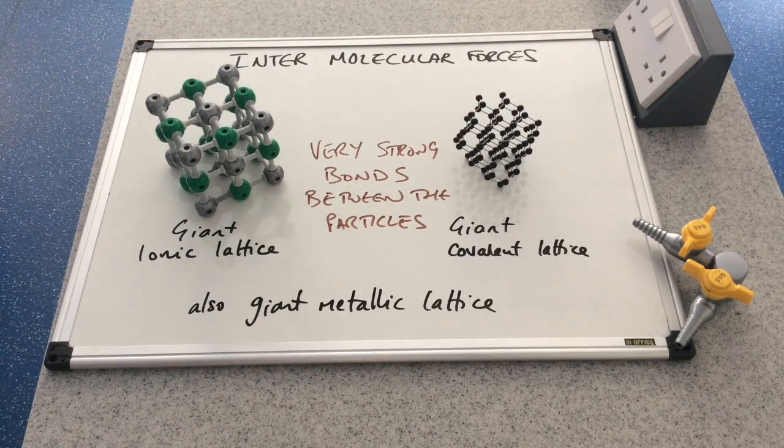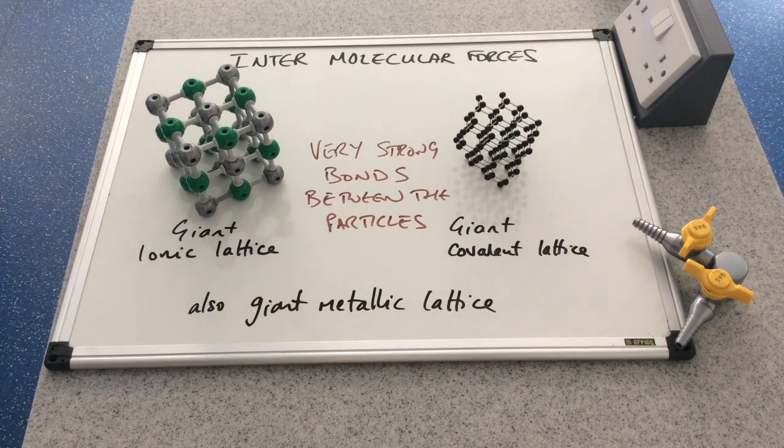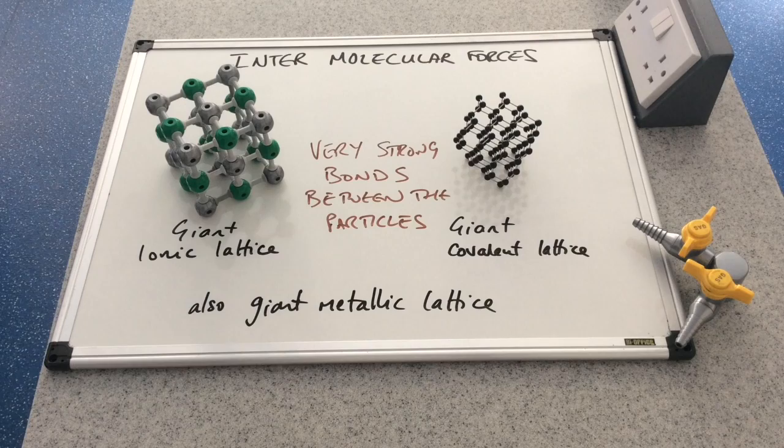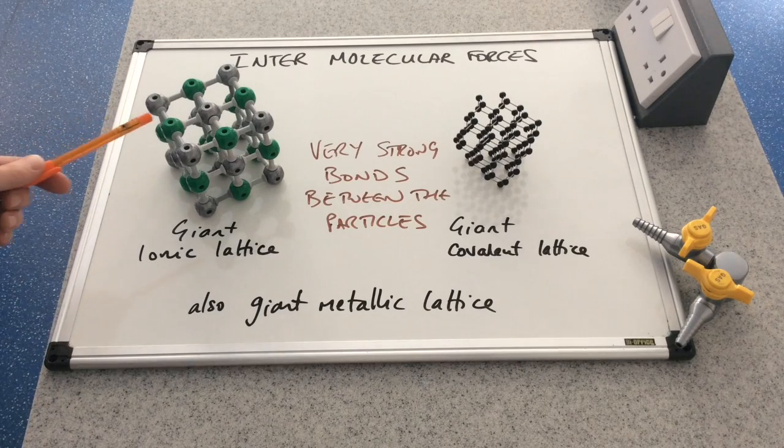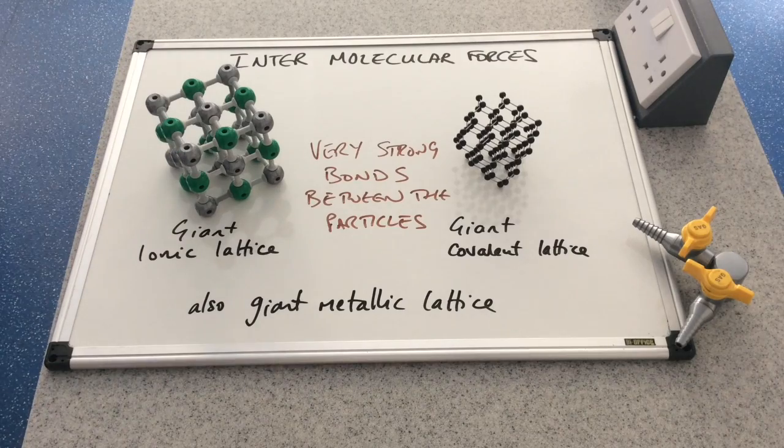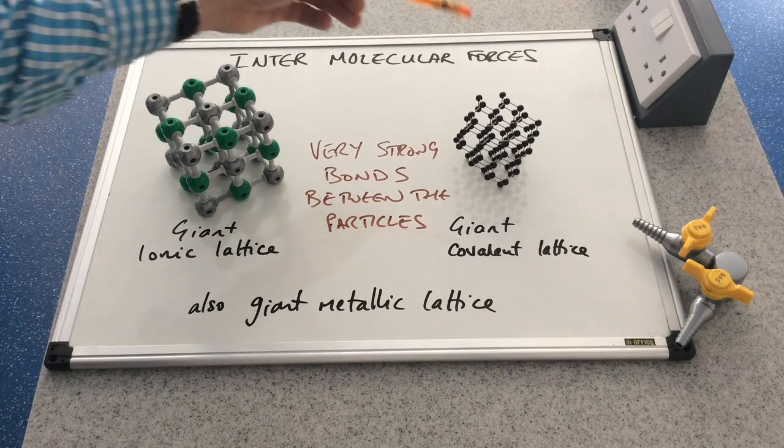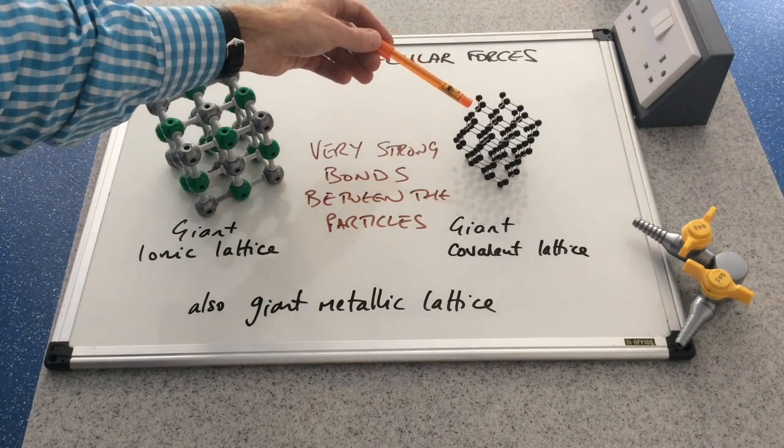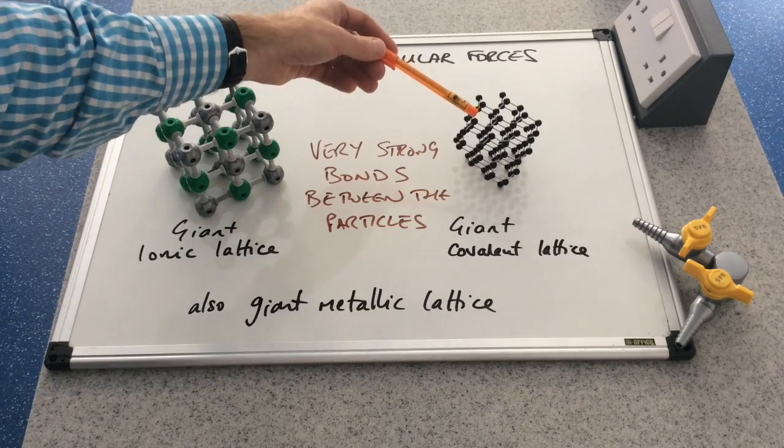you've got very strong bonds between the particles that make up these lattices. In a giant ionic lattice, we've got electrostatic attraction between the oppositely charged ions. In giant covalent lattices, we've got covalent bonds between the atoms.